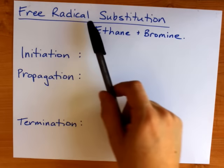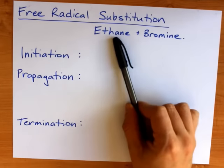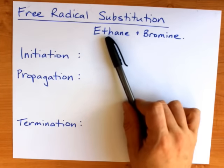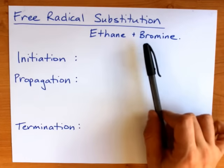Alright, quick little video about free radical substitution. This is where you take an alkane, that's all single bonds between carbon and hydrogens, and you replace some of those hydrogens with a halogen.